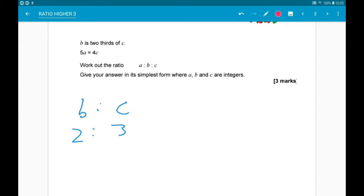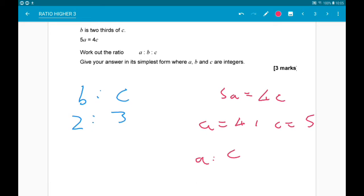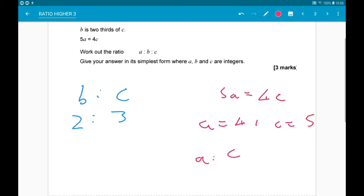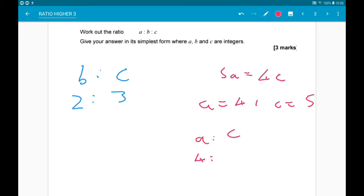Then we're told 5A is equal to 4C. So let's do this. We want to turn this into a ratio. Think of numbers for A and C that would make this work. So what number do 5 and 4 both go into? It would be 20. So A would need to be 4 and C would need to be 5. So A to C is 4 to 5.